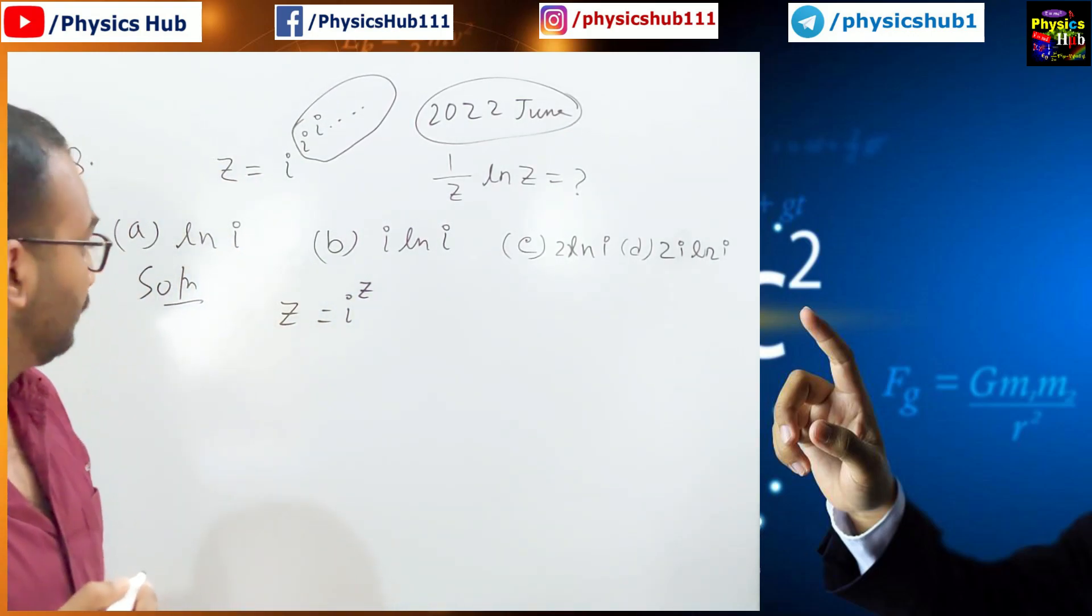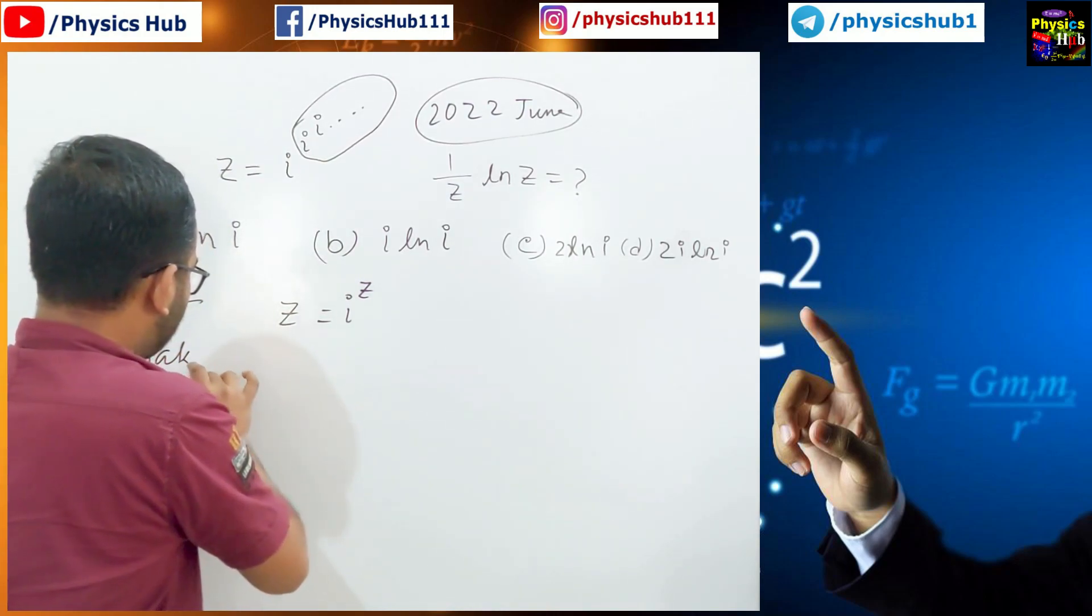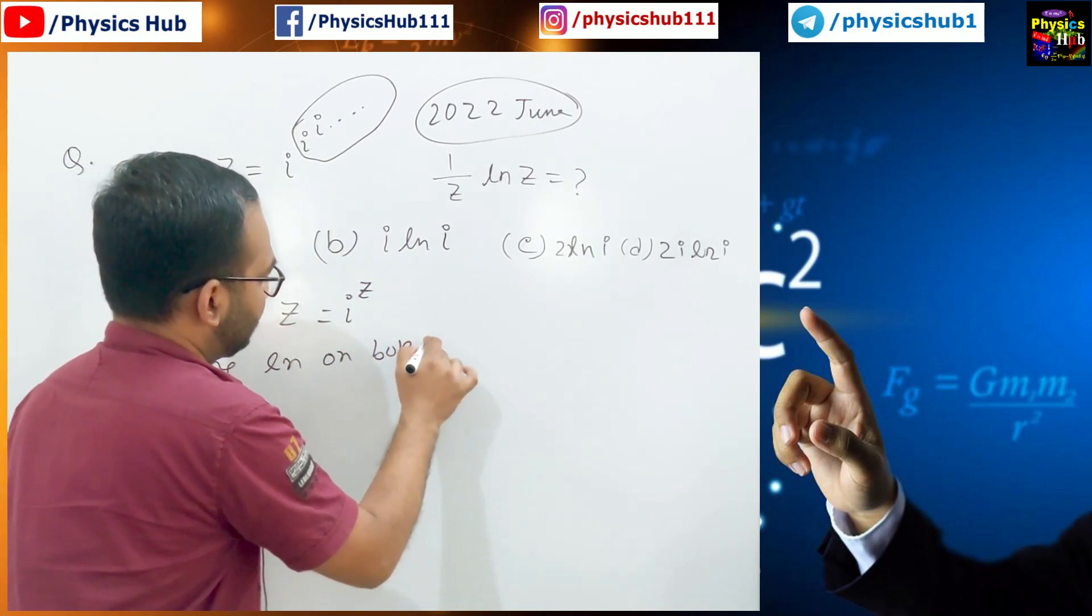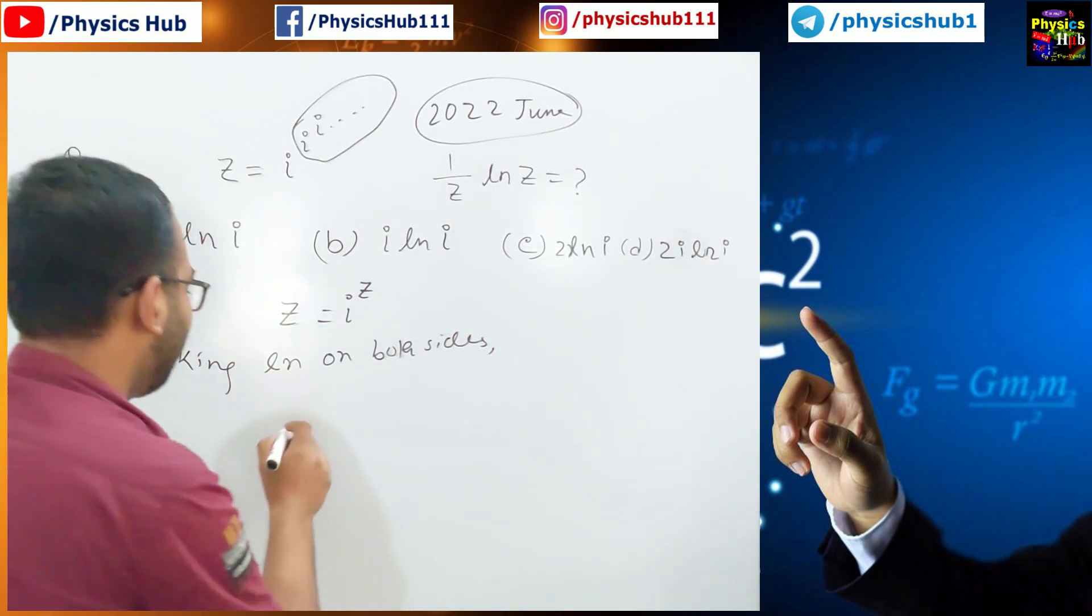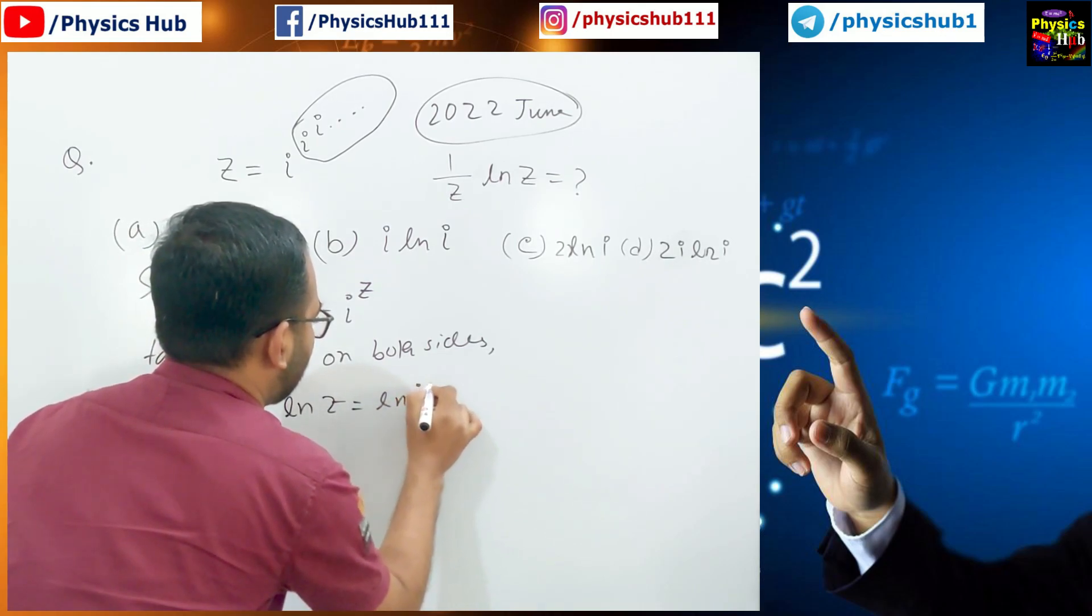Now what we can do, we can take logarithm on both sides. Taking logarithm on both sides, what do you get? ln z equals ln i to the power z.